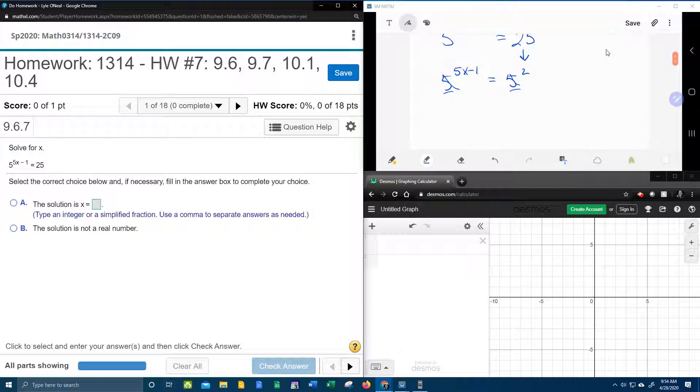And that's going to just leave me with 5x minus 1 equals 2. And then I've got a simple two-step equation to solve.